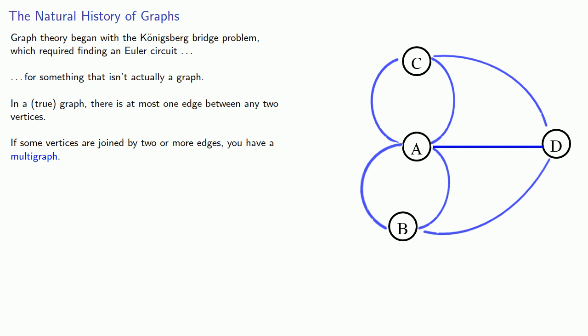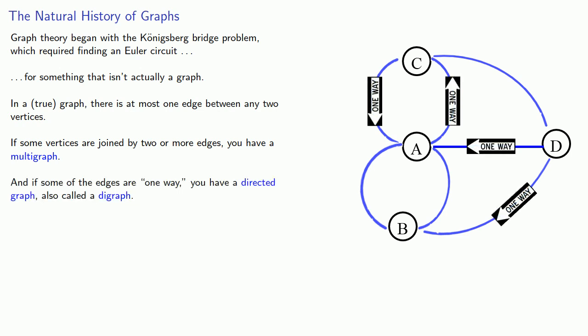But a more important distinction is the following: if some of our edges are one-way and you could only proceed in a certain direction along them, you have a directed graph, also called a digraph. Digraphs are fantastically important in the modern world because they are a good way to represent web pages on the internet.